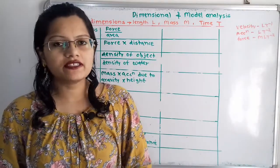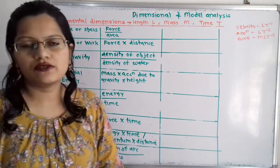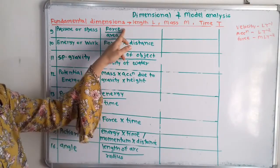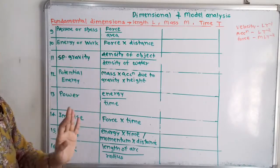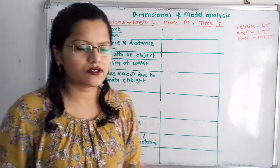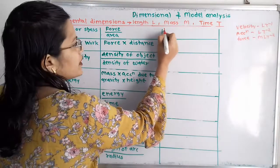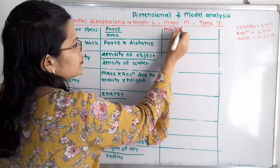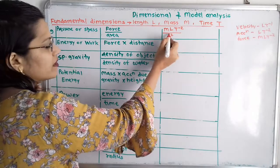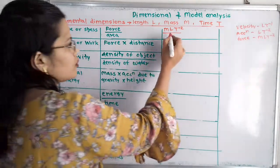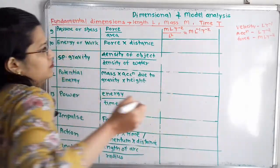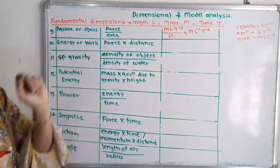Now we will move to pressure or stress. Pressure or stress equals force upon area. Force is MLT raised to minus 2 and area is L squared. Writing MLT raised to minus 2 divided by L squared, the L terms partially cancel leaving one L in the denominator. Shifting to the numerator gives ML raised to minus 1 T raised to minus 2.